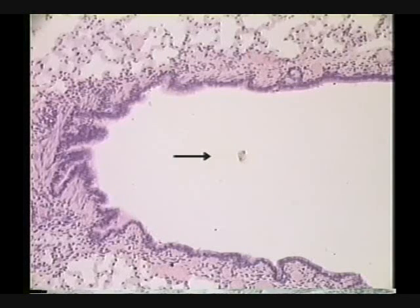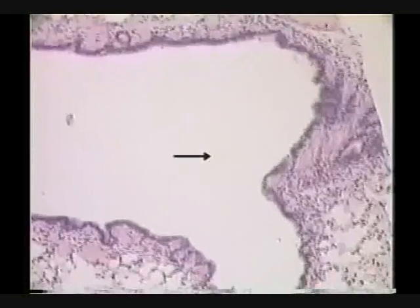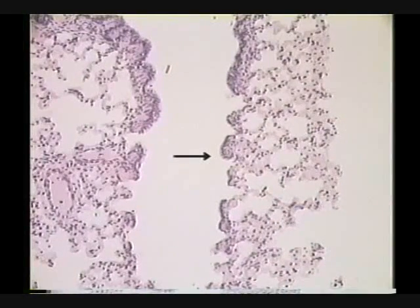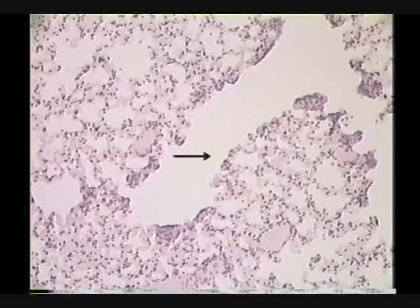So respiratory bronchiole signifies there's some alveoli along the side. In fact, we followed this one. When I saw this one, look, see, because I can follow it, follow this branch down. Now what are we in? Respiratory bronchiole. And follow it on down, and now what are we in? Alveolar duct.